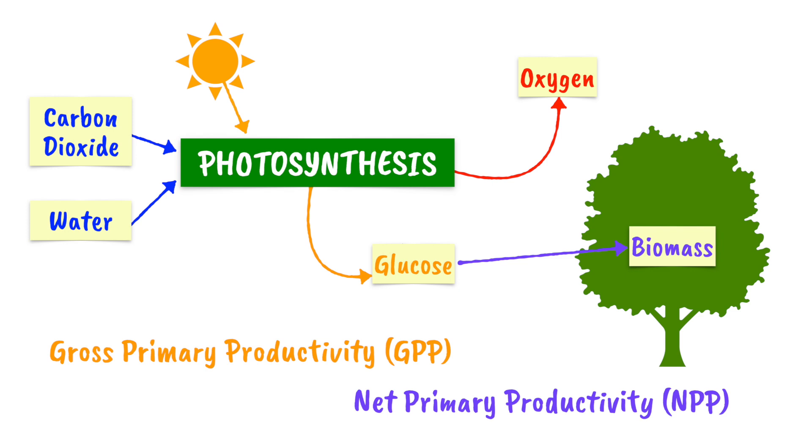The net primary productivity is the rate at which energy is stored as biomass by producers. NPP is just the GPP after accounting for the amount of that chemical energy that has been used for respiration. Mathematically, NPP equals GPP minus R.